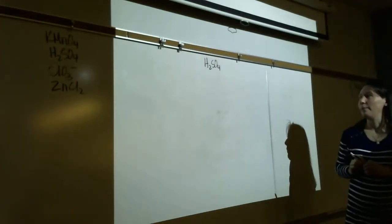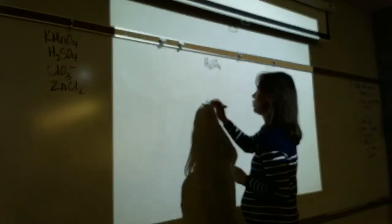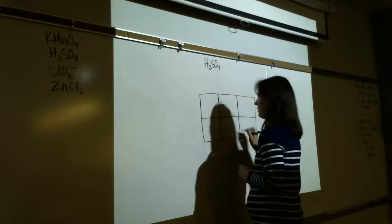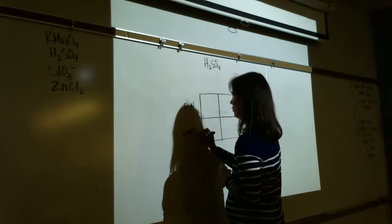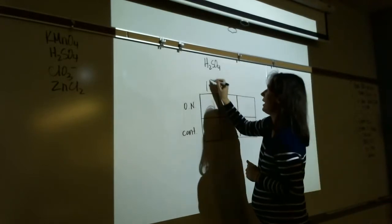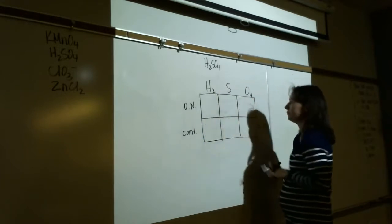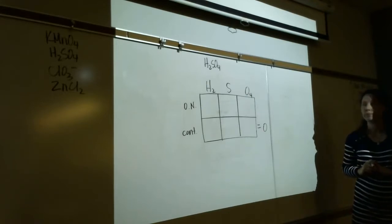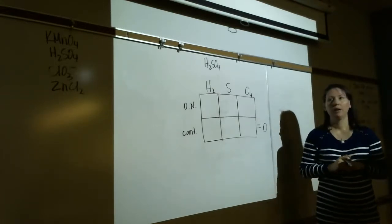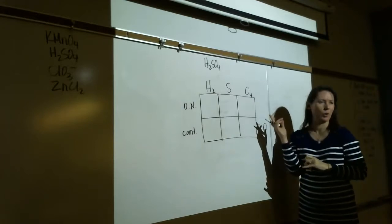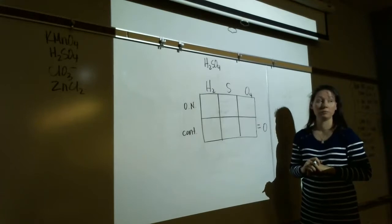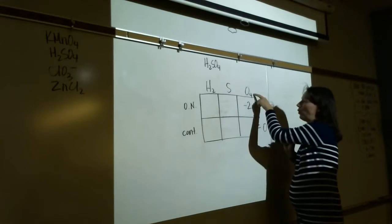Now ClO3- — chlorate. This compound has a charge of -1, so contributions must add up to -1, not zero. We have a usually rule for chlorine (group 7, usually -1) and an always rule for oxygen. Always follow the always rule first. Oxygen is always -2; three oxygens contribute -3. For the contributions to sum to -1, chlorine's contribution must be +5. This shows why chlorine's rule is a 'usually' rule — here it's +5, not -1.